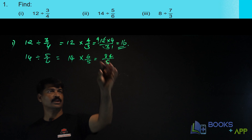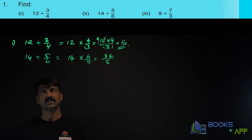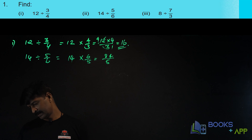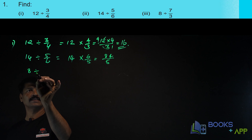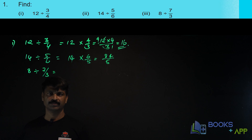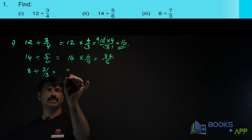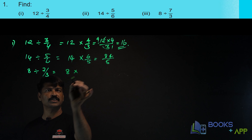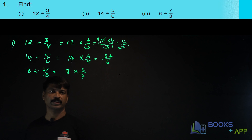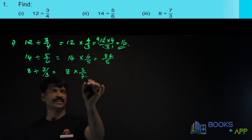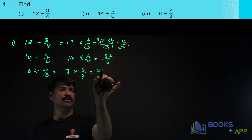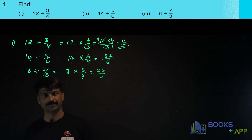If you want, you can convert this into a mixed fraction. Now let us solve one more: 8 divided by 7 by 3. Division becomes multiplication, but you have to take the reciprocal of 7 by 3, that is 3 by 7. So the answer is 8 into 3, which is 24 by 7.